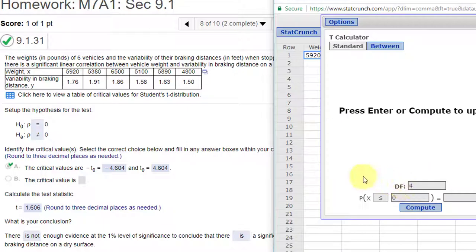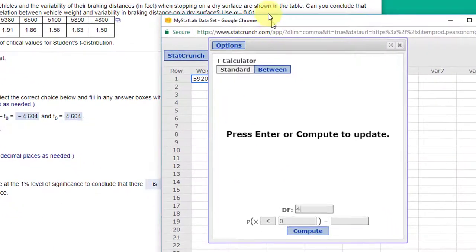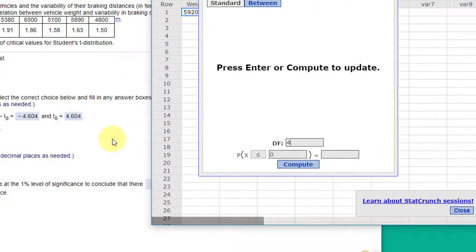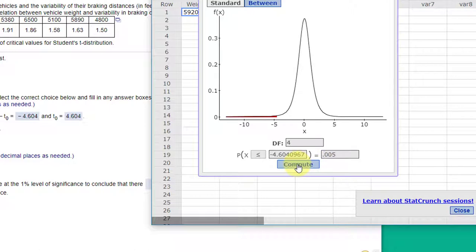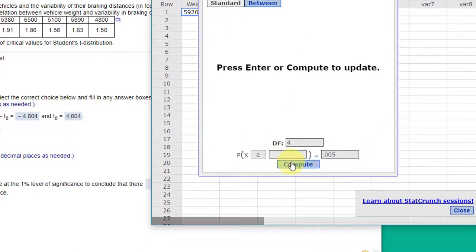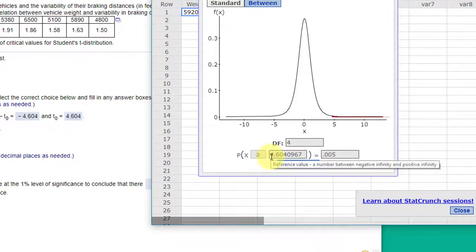Our alpha is 0.01 and it's a two-tail, so we need to put half in each end, so that's 0.005. I'm going to click Compute and that gives us a critical value on the left side of minus 4.604 and on the upper side we should have the same thing by symmetry, plus 4.604. So those are our critical values.